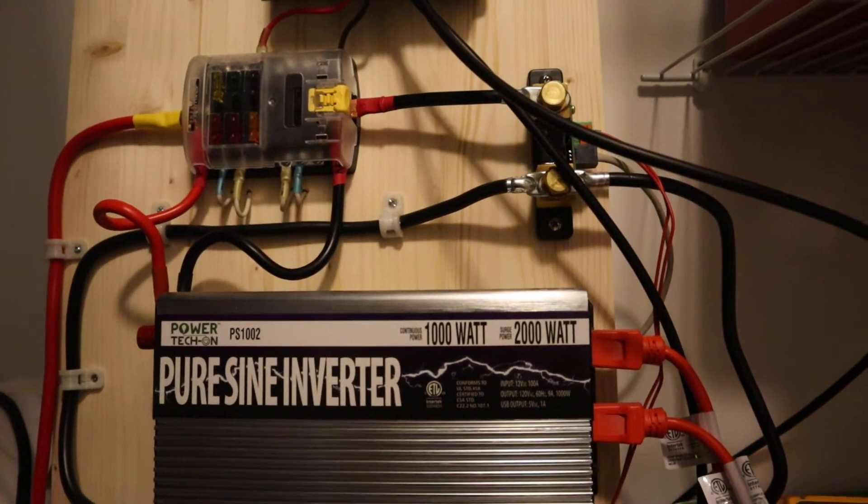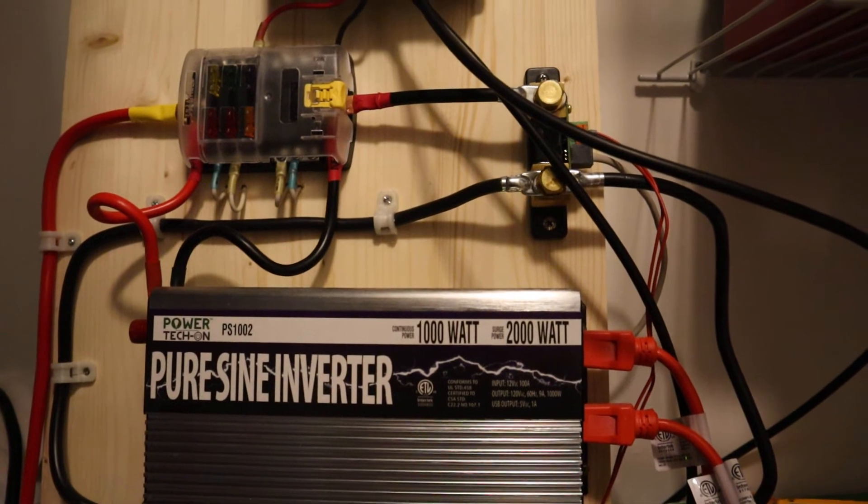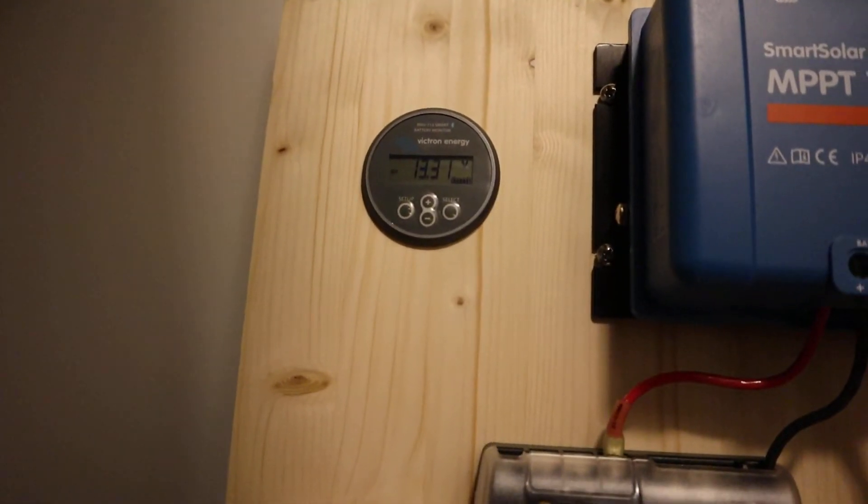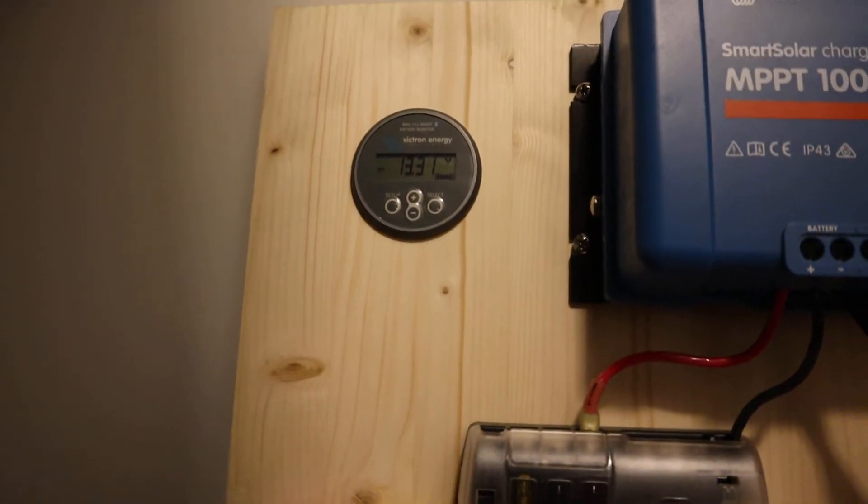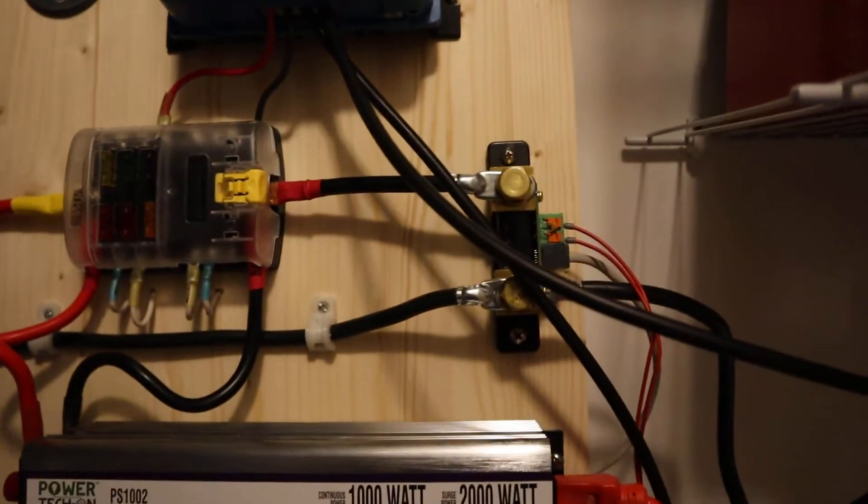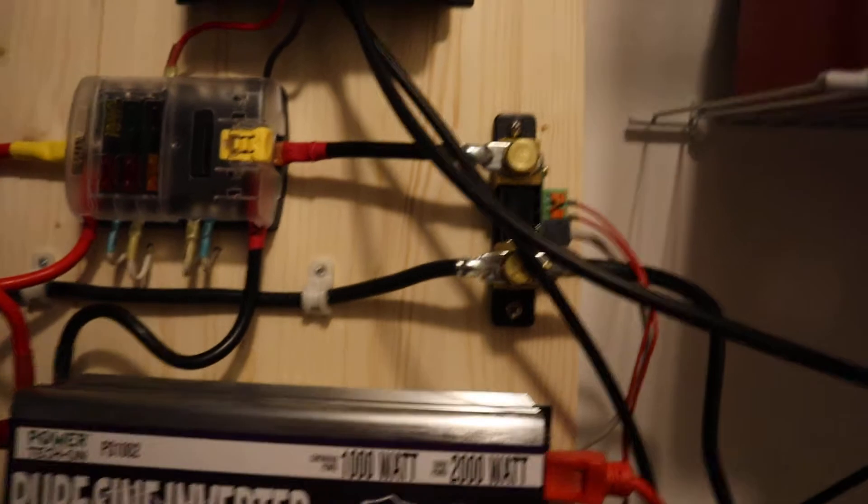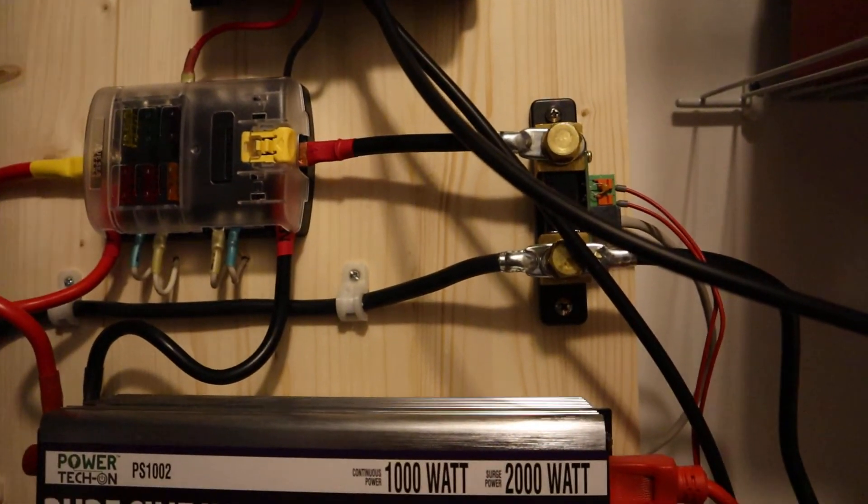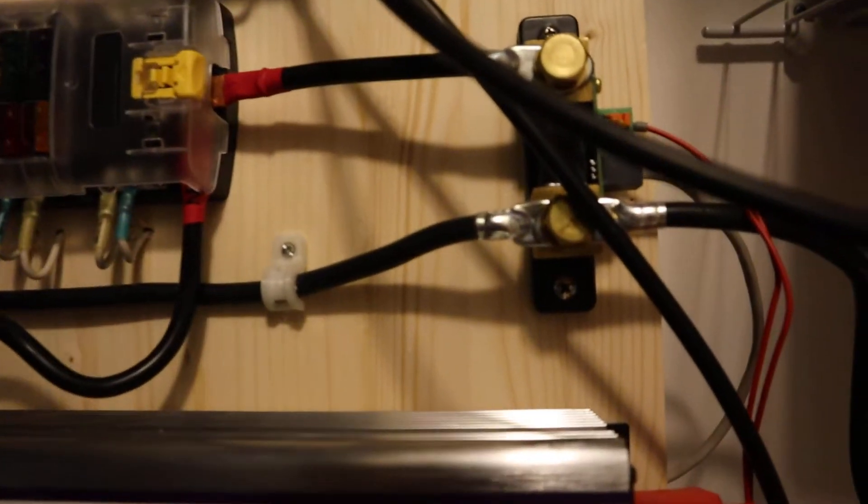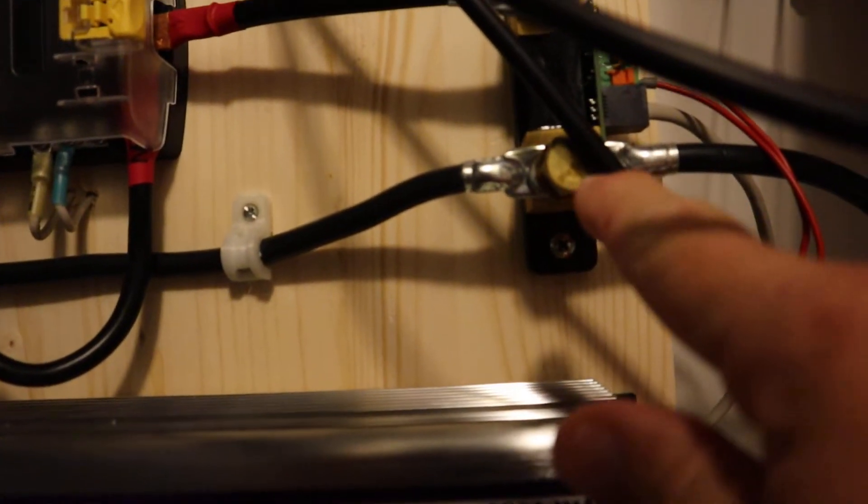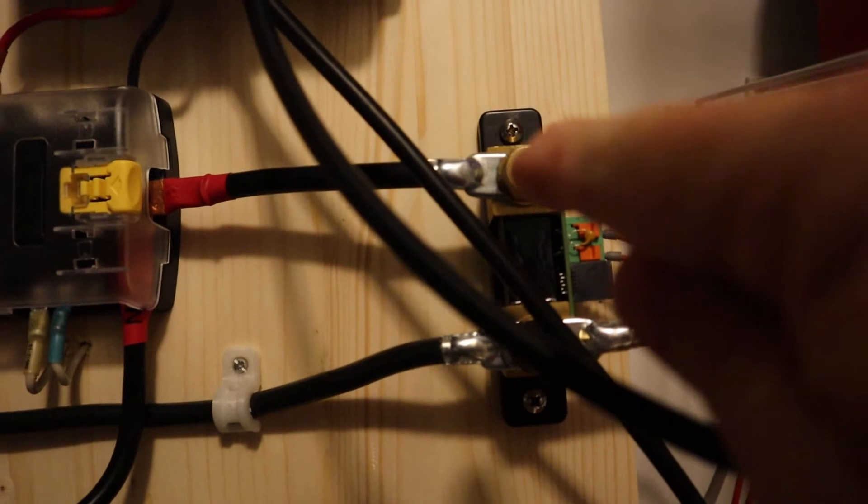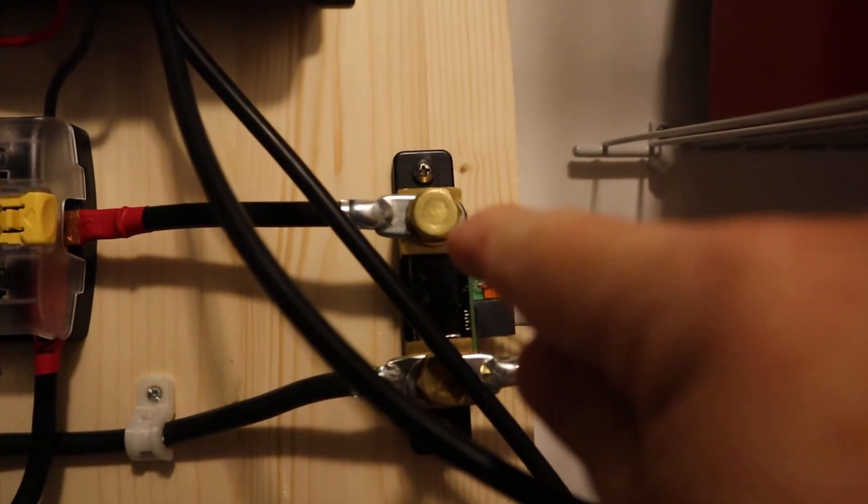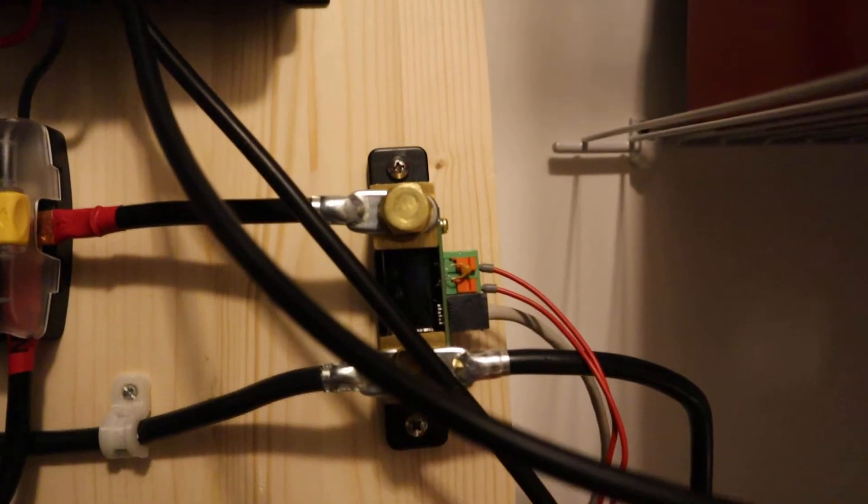I'm going to do a quick discussion on how to calibrate the Victron BMV 712 battery monitor with your system. Basically you do a zero calibration. This is the battery side of the shunt and this is the load side. So what you're going to do is remove this screw and lift this wire off.